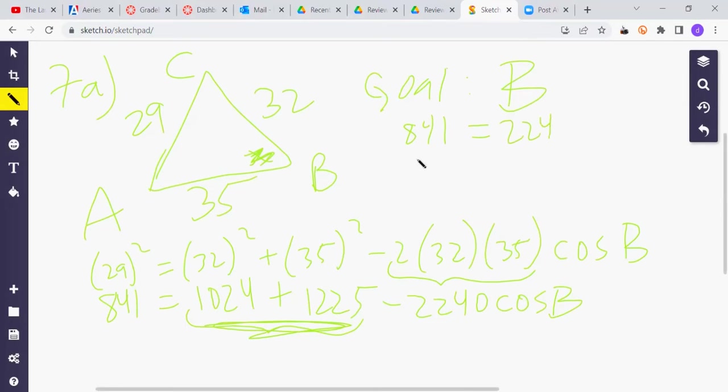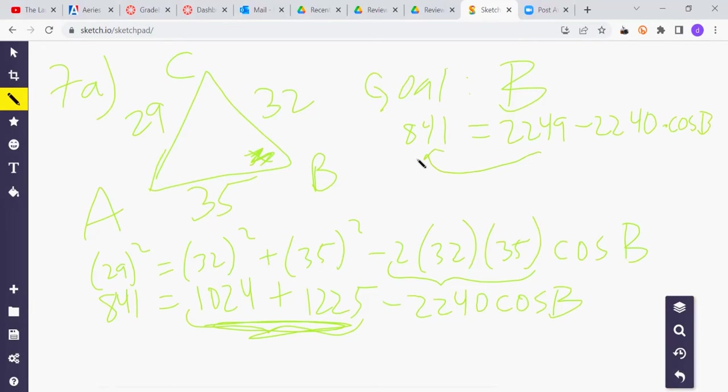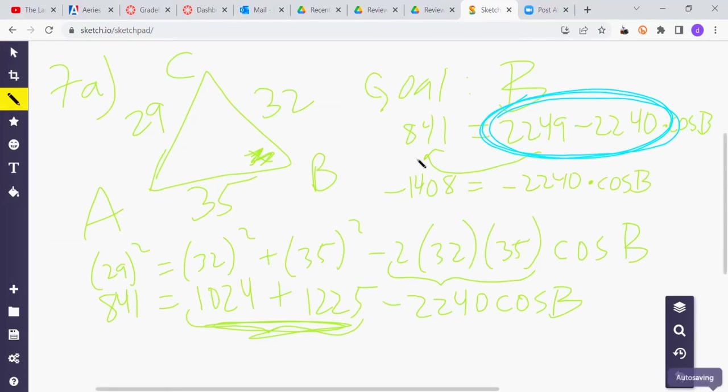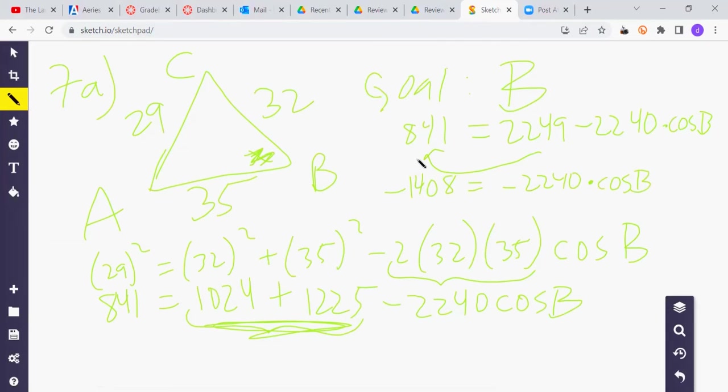Why don't we subtract 2249 to the other side? And that's negative 1408 equals negative 2240 times the cosine of B. In case you're wondering, how come we didn't just go this minus that? You cannot subtract those numbers. Because this is being multiplied by cosine B. And according to PEMDAS, multiplication is stronger than subtraction.